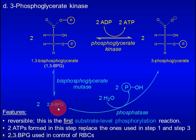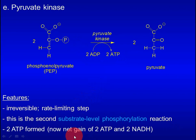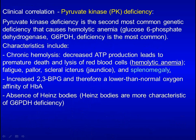In red blood cells, 1,3-BPG can be converted to 2,3-BPG, a compound that promotes release of oxygen from hemoglobin. In the final step, phosphate is transferred from phosphoenolpyruvate (PEP) to ADP, giving rise to ATP. This step is irreversible and rate-limiting, and represents the second substrate-level phosphorylation reaction. With this, glycolysis yields a net gain of 2 ATP and 2 NADH.